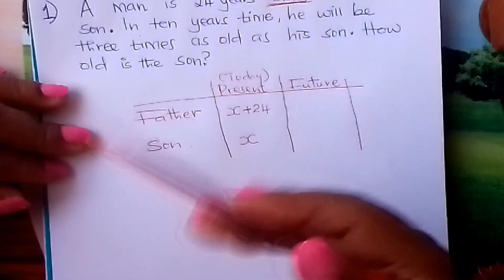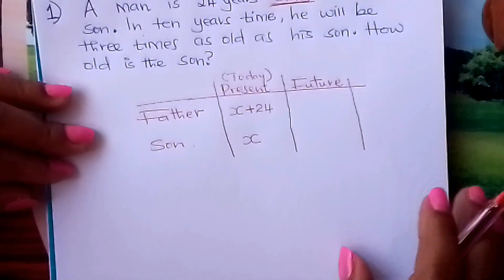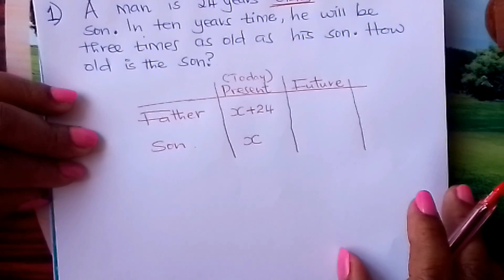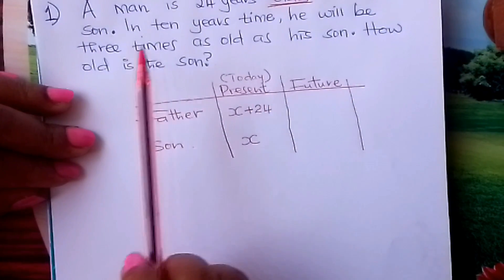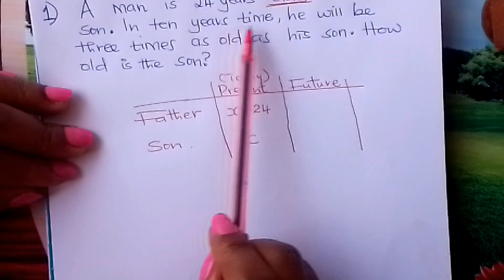The father is 24 years older, so you add 24 to the X. Then we go to the second sentence: in 10 years' time.